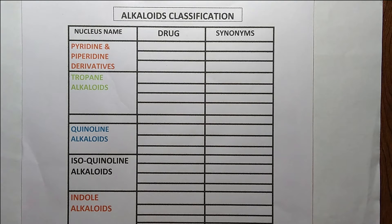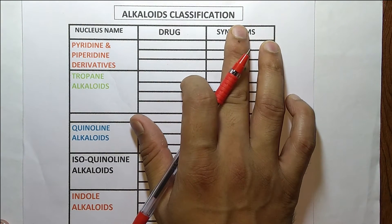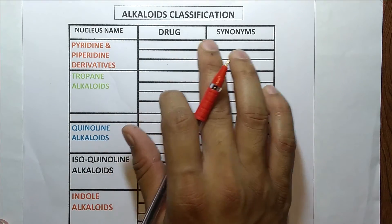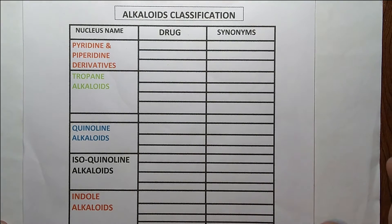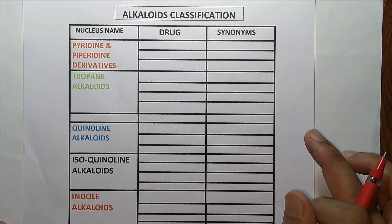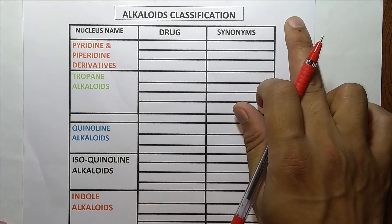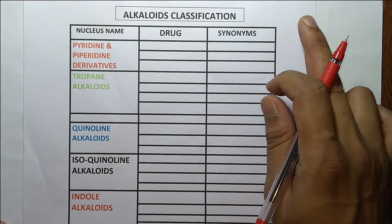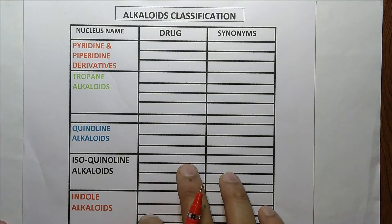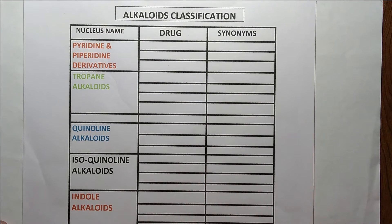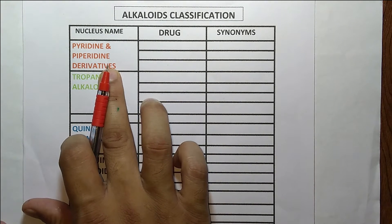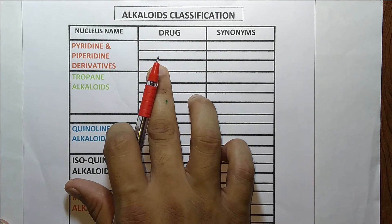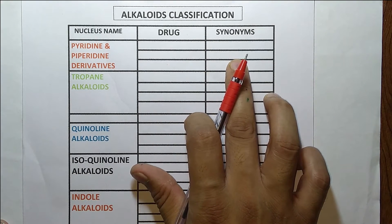Hello students, welcome to the channel Pharma4U. Today in this video we are going to discuss alkaloid classification with their nucleus name, drugs, and synonyms. This is the second part of alkaloids — we already discussed the introduction in our first video, so a link is shared here. Let's start the alkaloid classification, discussing the nucleus name, the drugs which belong to this nucleus, and their synonyms.